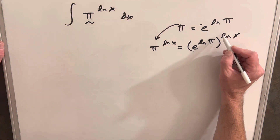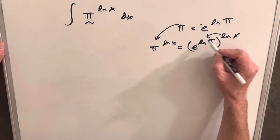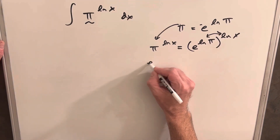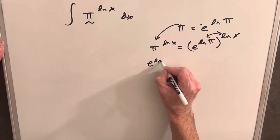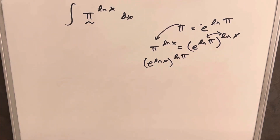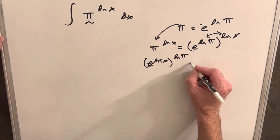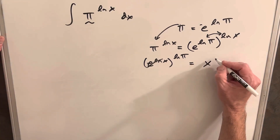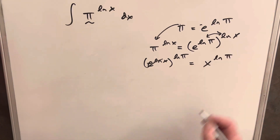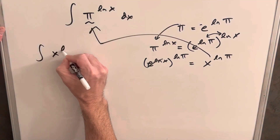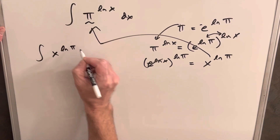In one step, we can multiply in our ln x and take the ln π out front. So we can rewrite this as e^(ln x · ln π). But then the inside — e^(ln x) — is just x. So when those cancel, it's going to be x to the ln π. Rewriting this, we're going to have the integral of x^(ln π) dx.